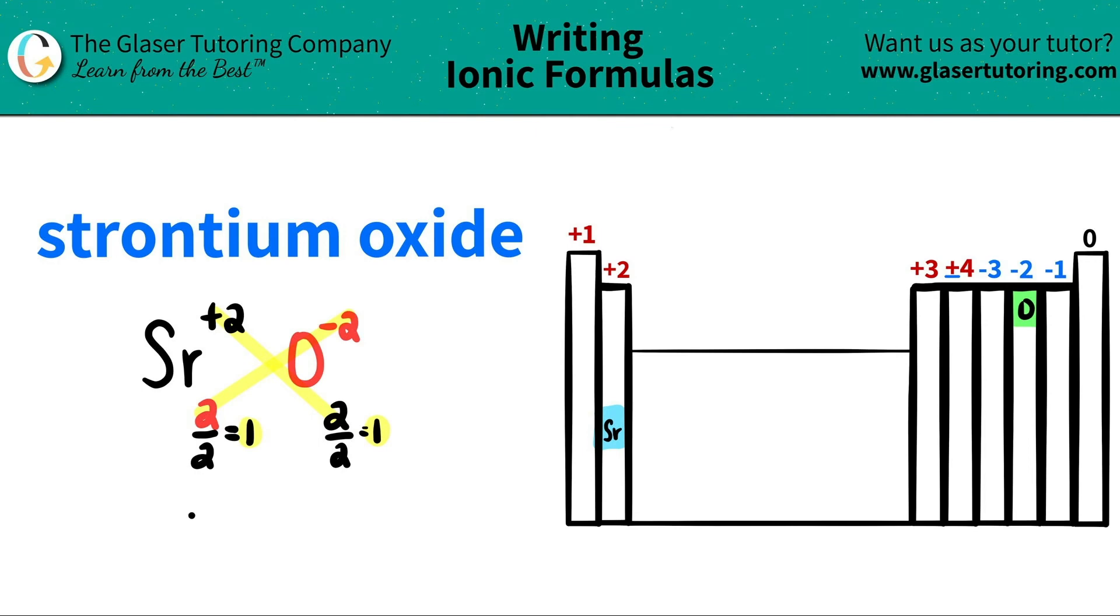So now I'm going to start it off. I have strontium. I now only have one of them, so I don't have to write it. And for the oxygen, I only have one of them, so I don't have to write that number either. And we're done. So strontium oxide is just SrO.